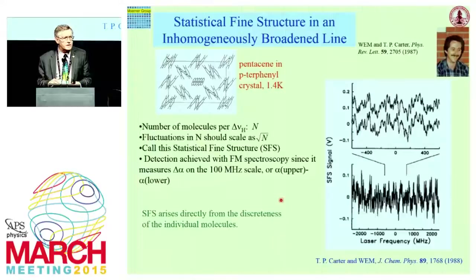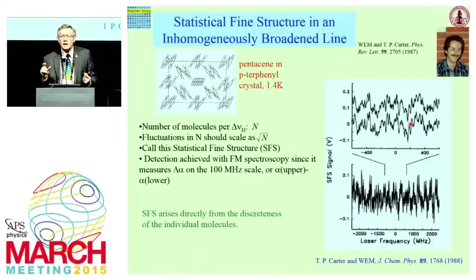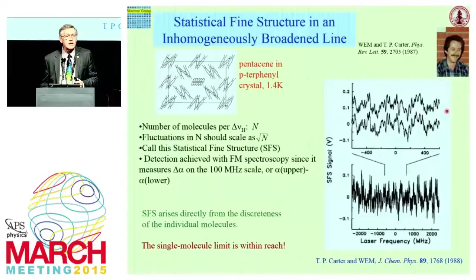If total absorption scales as the number of molecules in resonance, this effect scales in RMS size as the square root of the number of molecules in resonance. We were able to observe this using FM spectroscopy — a method that only measures the difference in absorptions over a certain spectral scale, ideally suited for observing this fine structure. The other aspect of statistical fine structure is its fascinating scaling: if you want to go to the single molecule limit, you only have to work 32 times harder — not a thousand times harder. Once you can see this effect, scaling as the square root of N, that's in your favor for pushing to the N equal to one limit.